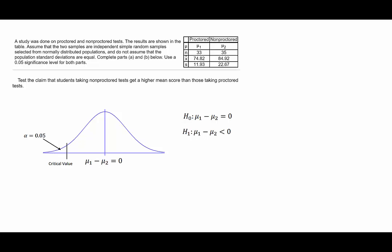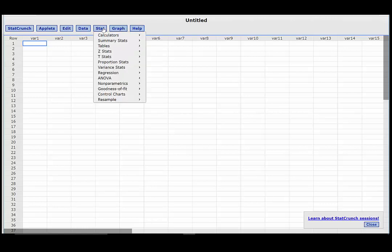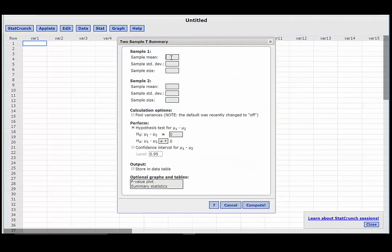We can use StatCrunch to find the test value and the p-value for this hypothesis test. Press stat, t-stats, to sample with summary. For group 1, the sample mean was 74.82, the sample standard deviation was 11.93, and the sample size was 33.